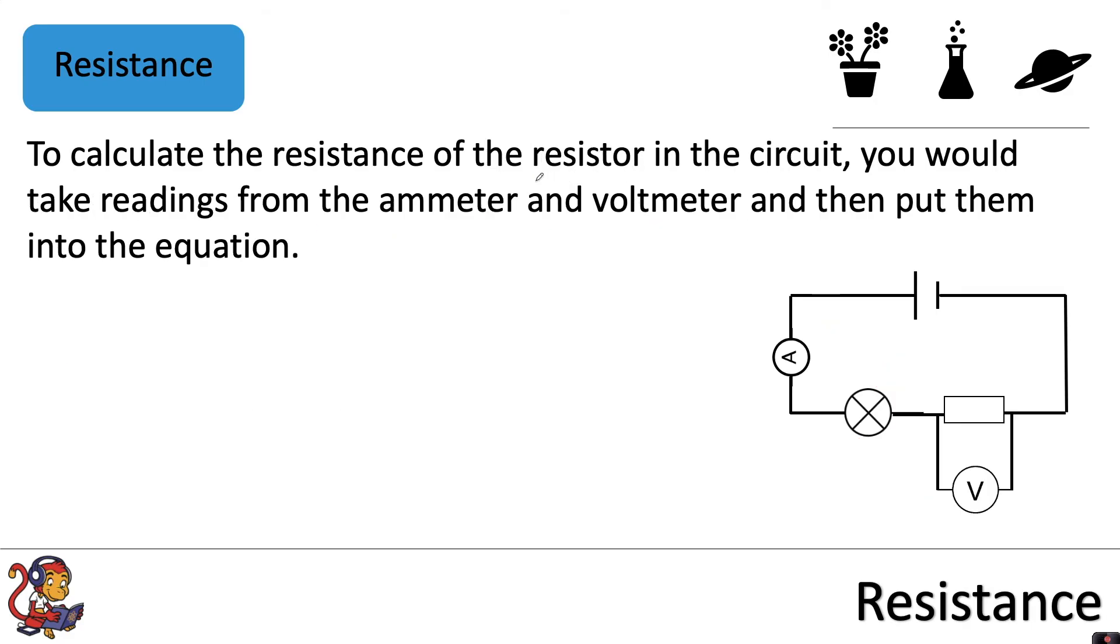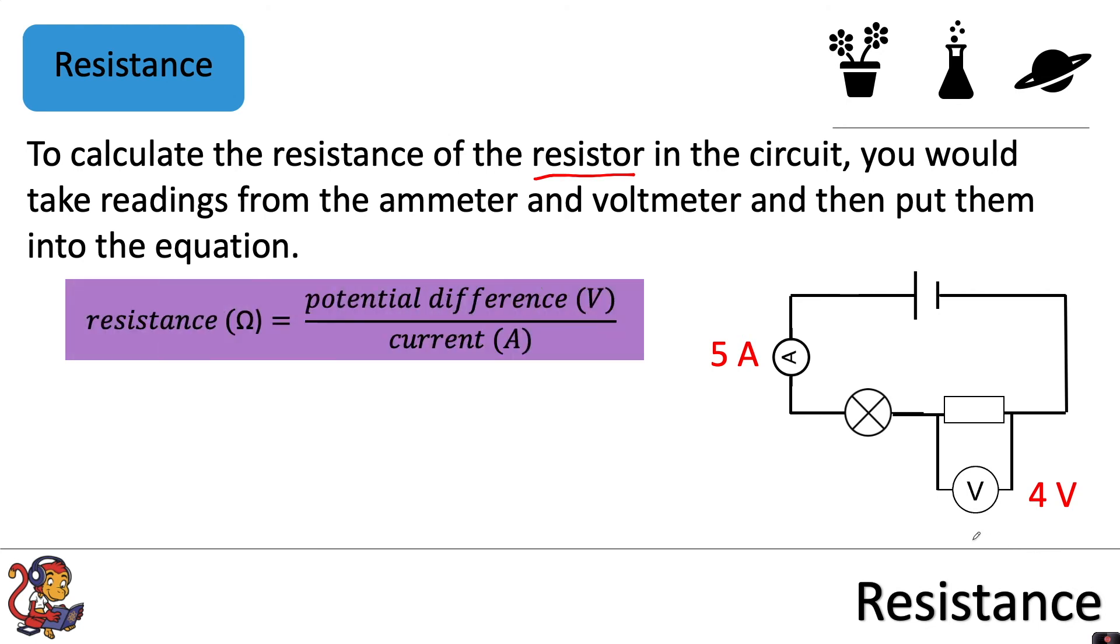Similarly, if you now wanted to calculate the resistance of the resistor, you could keep the ammeter in the same place but you'd need to move the voltmeter so that it's now across the resistor. And again you take your readings, so 5 amps for the current and the potential difference here is 4 volts. So we put our numbers into the equation with our potential difference 4 volts divided by our 5 amps to calculate the resistance of the resistor as 0.8 ohms.